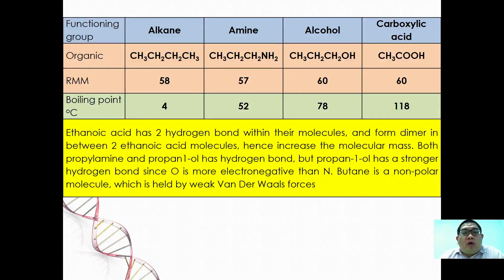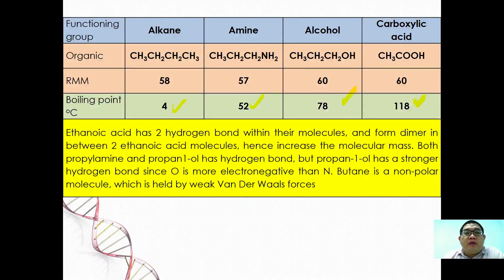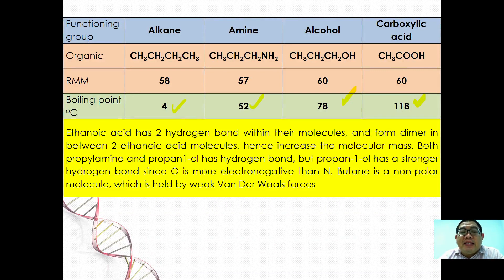Comparing to other functional groups: carboxylic acid has the highest boiling point because ethanoic acid forms two hydrogen bonds and dimerises, increasing effective molecular mass. Both propanamine and propan-1-ol have hydrogen bonds, but propan-1-ol has a stronger hydrogen bond since oxygen is more electronegative than nitrogen. Propane, being a non-polar molecule held by weak van der Waals forces, has the lowest boiling point.